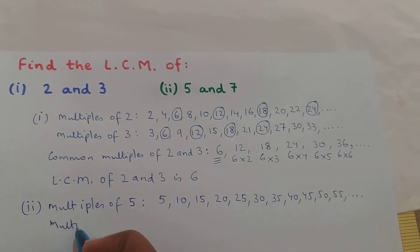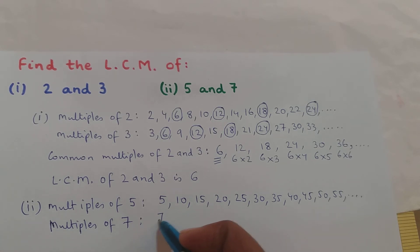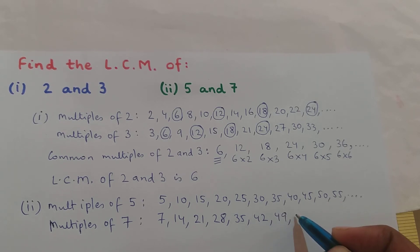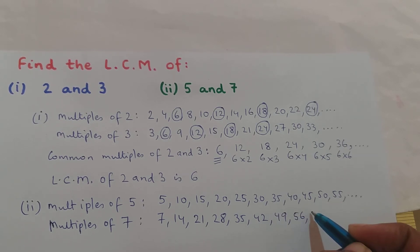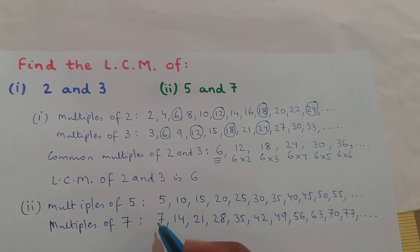Next I will write down the multiples of 7. Sorry for my poor handwriting — this is M for multiples of 7. The multiples of 7 are: 7, 14, 21, 28, 35, 42, 49, 56, 63, 70, 77, and so on. So I have written down a few multiples of 7.